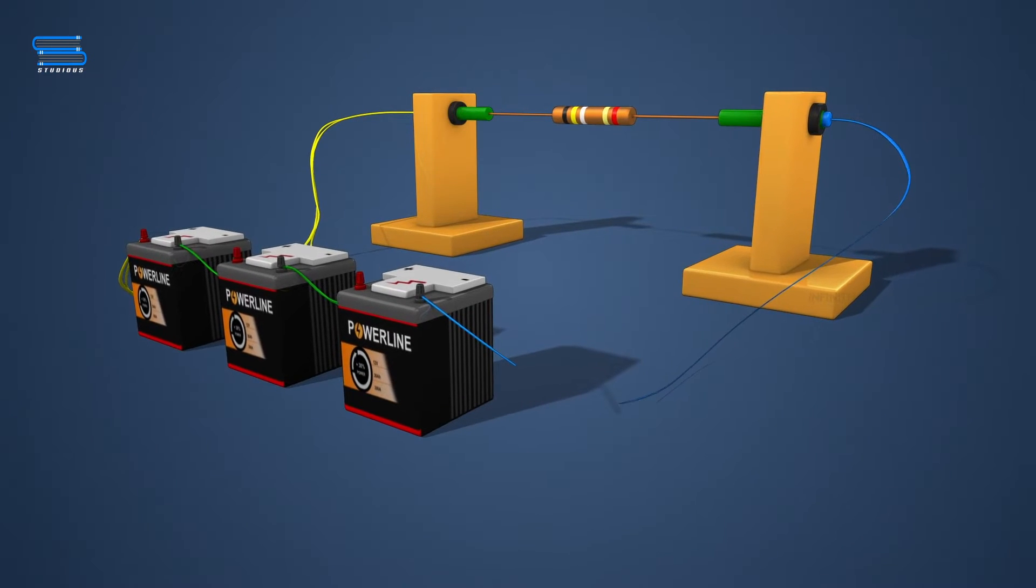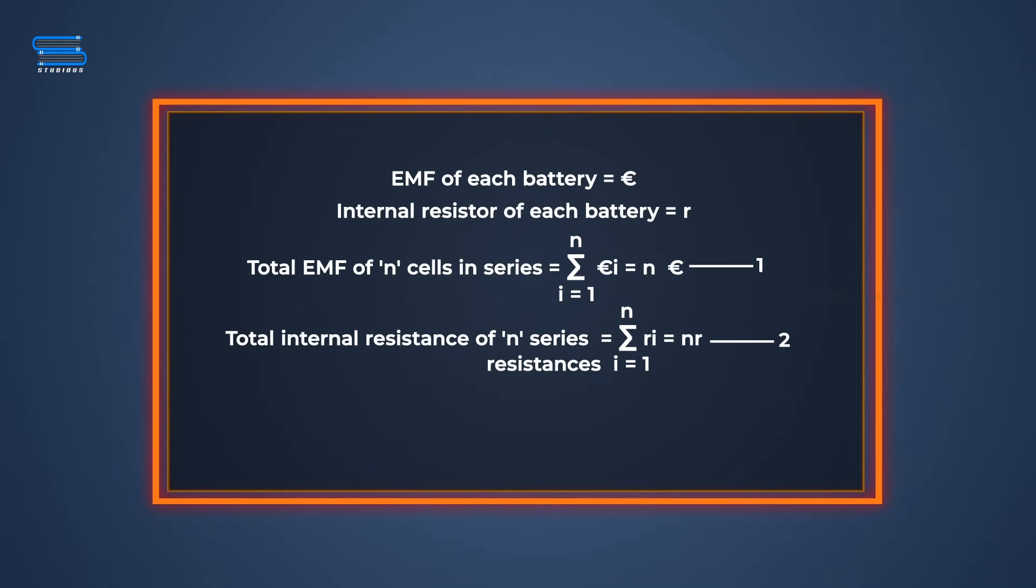For simplicity, here we consider all cells to be identical, each having an EMF epsilon and internal resistance r.